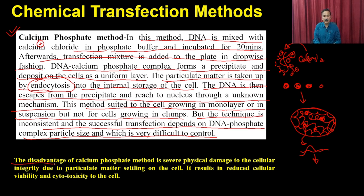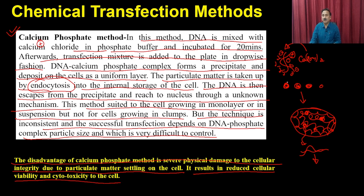One major disadvantage of the calcium phosphate method is that it causes physical damage to the cellular integrity of the cell due to the particulate matter settling on the cell, resulting in reduced cell viability and cytotoxicity. These heavy particles damage the mammalian cells and reduce cell viability, and as a result this method is not very popular.